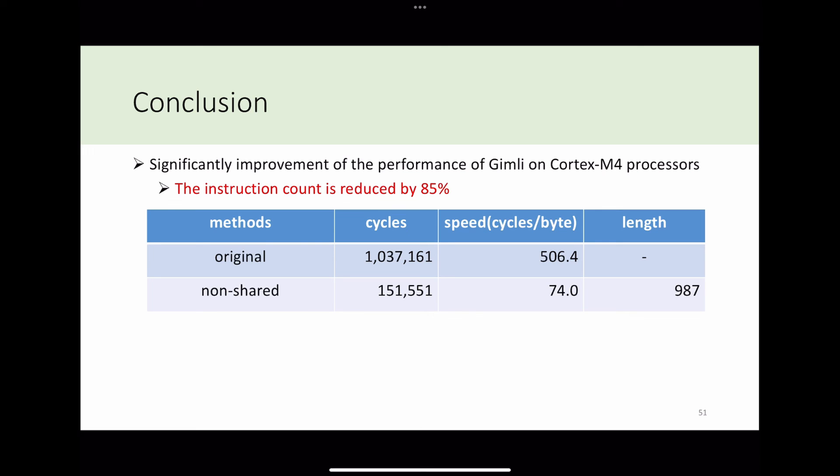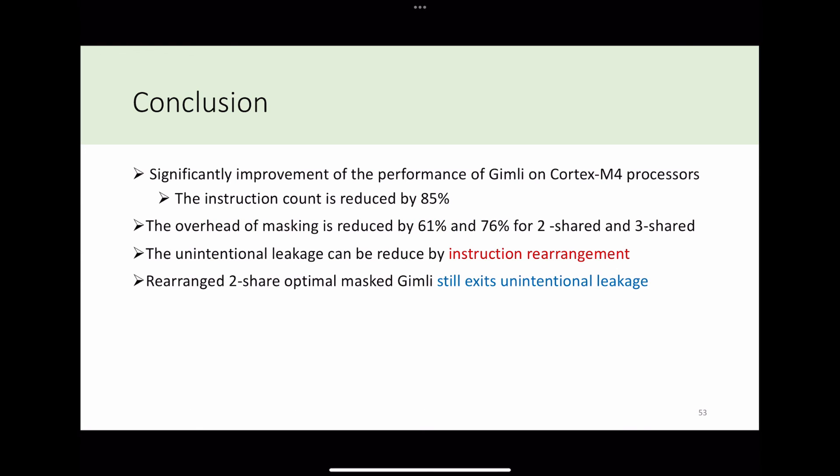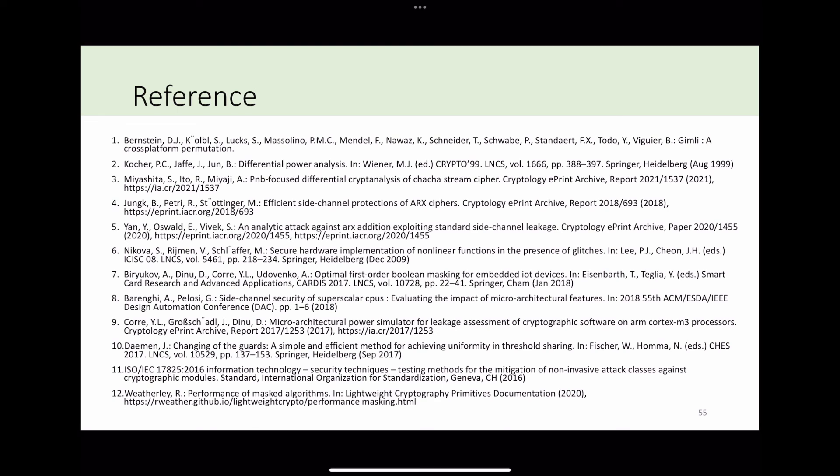We significantly improved the performance of Gimli on Cortex-M4, reducing the instruction count by 85%. The overhead of masking reduced by 61% and 76% for two-share and three-share. According to our experience, the unintentional leakage can be reduced by instruction rearrangement. However, the rearranged two-share optimal masking Gimli still exhibits some unintentional leakage. The three-share threshold implementation is an efficient and high security level method for masked Gimli, and it can pass the ISO 17825 level 4. This is my reference, and thank you for your listening.